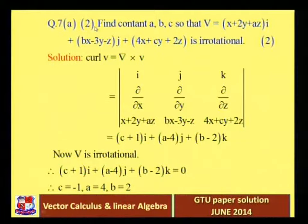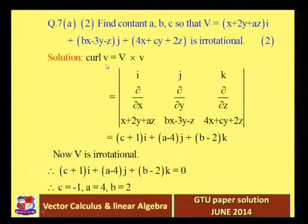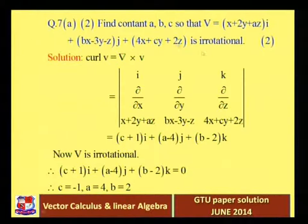Question 7a, second part: find constants a, b, c. Show that v is equal to (x + 2y + az)i + (bx - 3y - z)j + (4x + cy + 2z)k is irrotational. The meaning of irrotational is that curl of v equals 0 — that is the definition of irrotational.